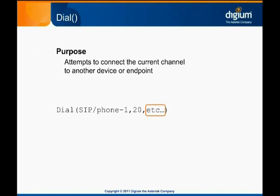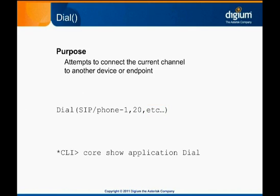After the timeout parameter, additional options to modify the behavior of app dial can be listed. In Asterisk 1.8, there are almost 40 different options to fine tune dial's behavior. These options do things like configure transfer and record abilities, limit call duration, or update caller ID settings. To see a whole list of options, run core show application dial on the Asterisk console.